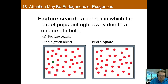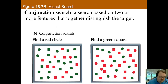Feature search is when you search based upon only one attribute, such as a shape or a color, as shown here. Feature search requires little attention because the individual is about equally as fast at the task regardless of whether distractors are present — it's a pretty easy task. Conjunction search is more difficult, as it requires finding an object that meets two or more criteria, such as finding a red circle. This type of search requires more attention, and performance is impaired when distractors are present.